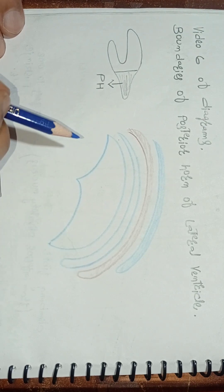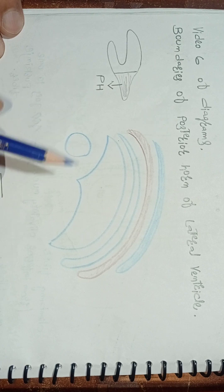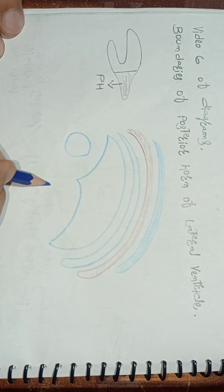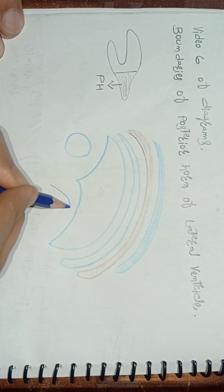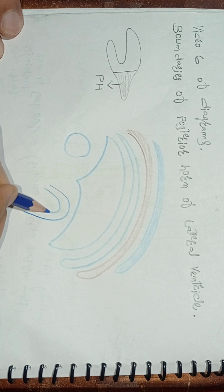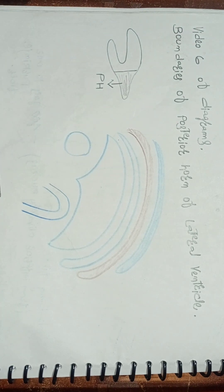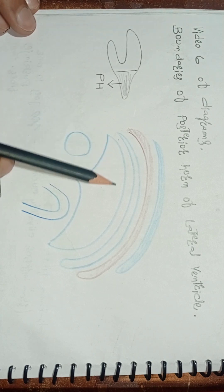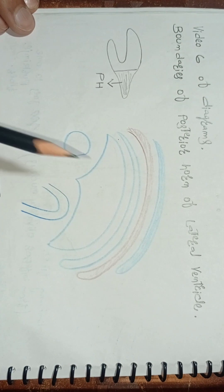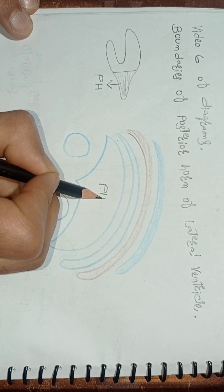Now we have to draw two more structures — one circle here and another structure like this. So this is our diagram. Now we'll name the different parts. This part right here is the cavity of the posterior horn of the lateral ventricle.